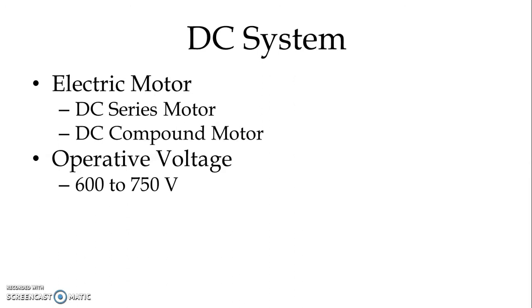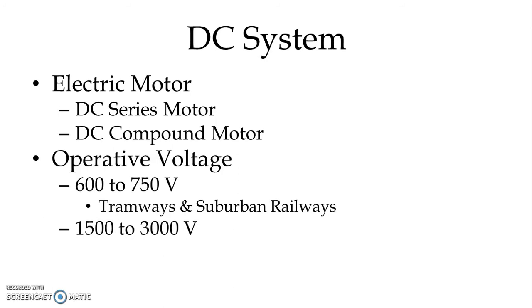Normally, the operative voltage is 600 to 750 volts for tramways and suburban railways. We also use 1500 to 3000 volts for mainline systems. In Bombay suburban trains, we use the 1500 volt DC system.